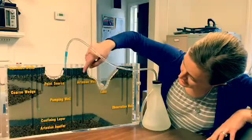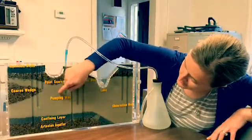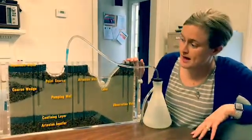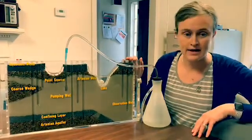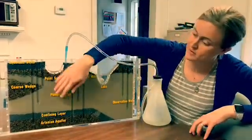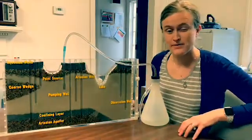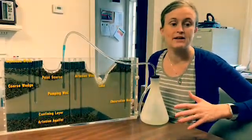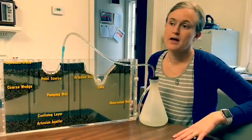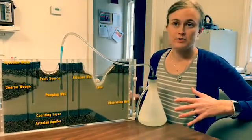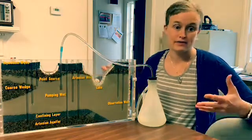Here we have a shallow well that is drilled into an unconfined aquifer. Unconfined means it is open to the surface. It looks very similar to what we have here in Rhode Island's sand and gravel aquifers. They are pretty much water held in wet sand and wet gravel.